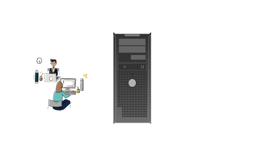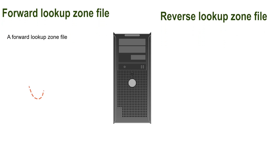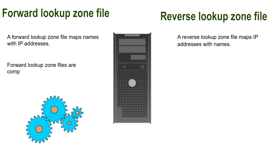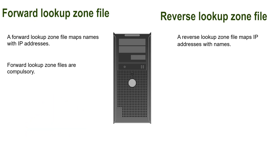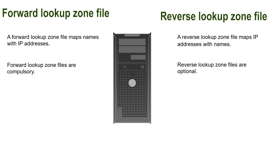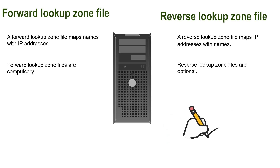Authoritative name servers use zone files for translation. There are two types of zone files: the forward lookup zone file and the reverse lookup zone file. A forward lookup zone file maps names with IP addresses, while a reverse lookup zone file maps IP addresses with names. Forward lookup zone files are compulsory — you need to create one for every domain and add records for all resources whose names you want to translate. Reverse lookup zone files are optional — you only need to create one for domains that run services requiring reverse mapping, and add records only for those services.